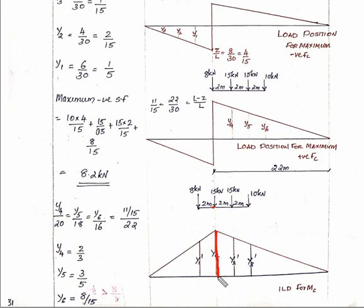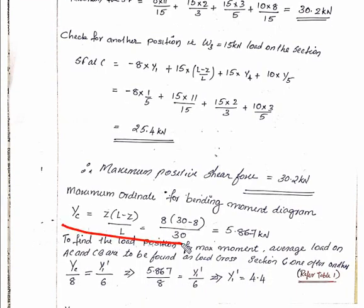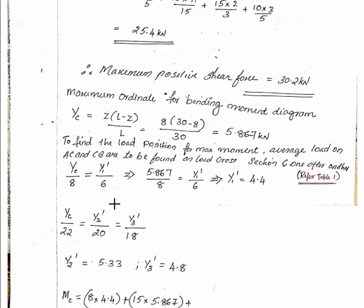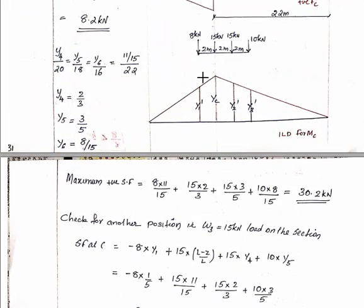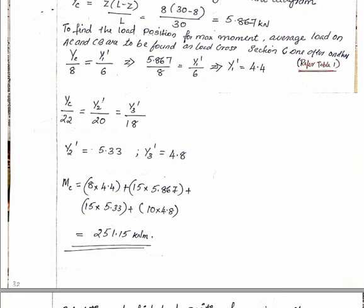With the second 15 kN load placed at C, the loads are 8 kN, 15 kN, 10 kN. The ordinate values are the Yc ordinate values. Yc is derived as Yc equals z into (L minus z) by L, from the first lecture. Using similar triangle principles, we calculate y1', y2', y3'. Maximum moment at C equals 8 into y1' plus 15 into Yc plus 15 into y2' plus 10 into y3'. Maximum moment at C is 251.15 kN·m.